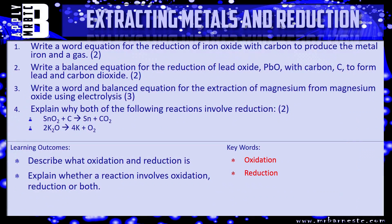I've got a couple of questions for you. Number one: write a word equation for the reduction of iron oxide with carbon to produce the metal iron and a gas — think about what gas is going to be formed. Number two: write the balanced equation for the reduction of lead oxide, PbO, with carbon to form lead and carbon dioxide.